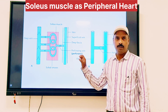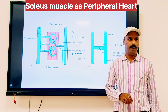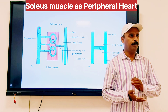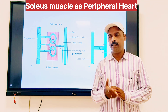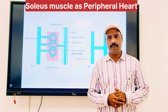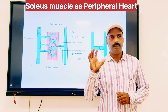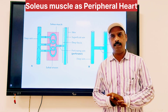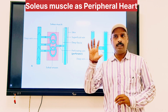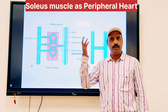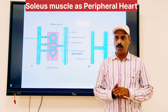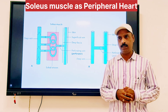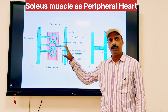Today we are going to discuss one short note which is commonly asked: the soleus as a peripheral heart. When you study the back of the leg, the muscles are the soleus, gastrocnemius medial head, lateral head, and plantaris. When a short note is asked about why soleus is called a peripheral heart, you have to tell the origin and insertion first: the soleal line of the tibia and posterior surface of the fibula are the origin, and the calcaneus bone is the insertion, forming the tendo calcaneus.